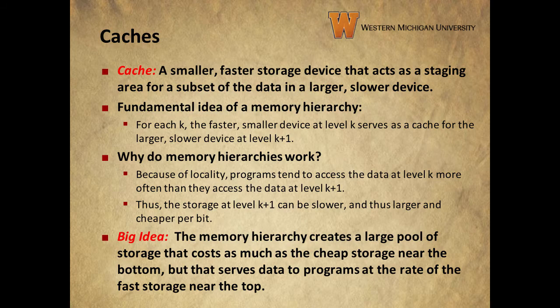So let's talk about caches. In general terms, a cache is a smaller, faster storage device that acts as a staging area for a subset of the data contained in a larger, slower device. For each level of the pyramid, moving from level 0 at the top, for each level K, the faster, smaller device at level K serves as a cache for the larger, slower device at level K plus 1, which is the next level down toward the base of the pyramid.